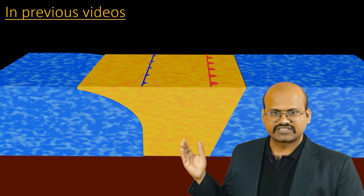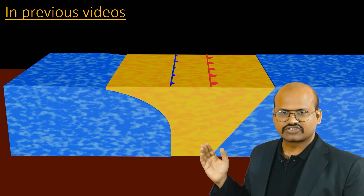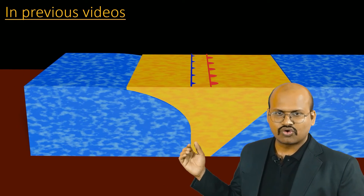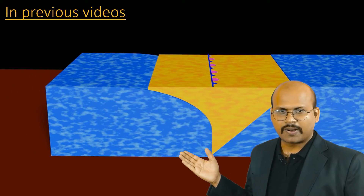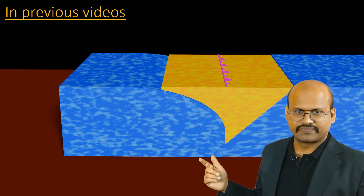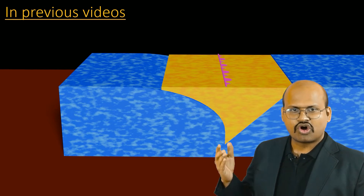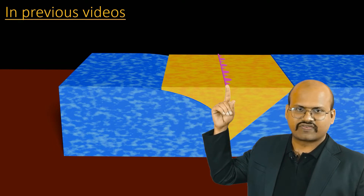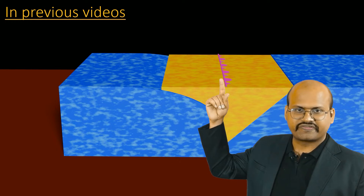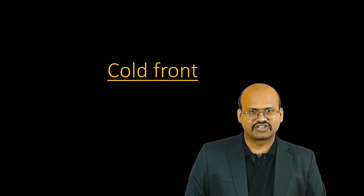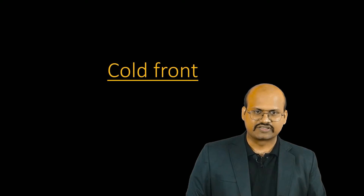Similarly we have the third front called occluded front, where a warm air mass is trapped between cold masses on both sides. Slowly over time the cold air masses are able to uplift the warm air mass and it loses contact with the ground. Such fronts are called occluded fronts, indicated by lines with alternating triangles and semi-circles.